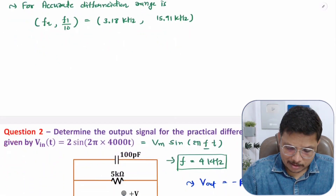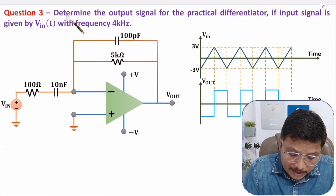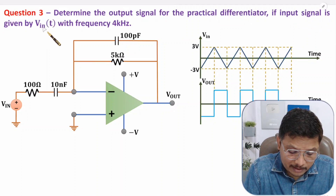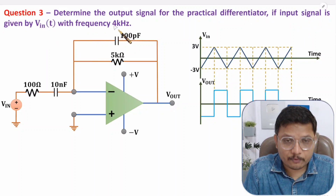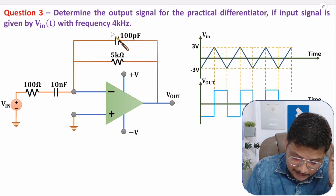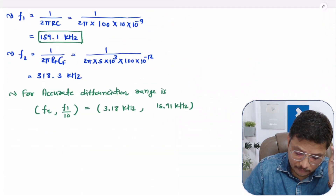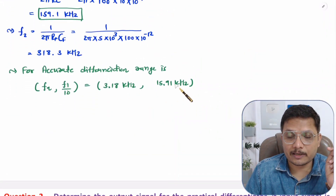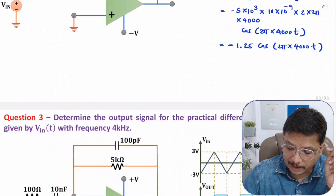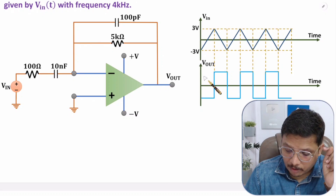Now let us have the third interesting question. Here we need to determine the output signal for the practical differentiator if the input signal is a triangular wave with a frequency of 4 kilohertz. So here there will be accurate differentiation, because the circuit is the same and 4 kilohertz is within the accurate differentiation range. We can use the output equation, but here we need to have the output in the form of a waveform.